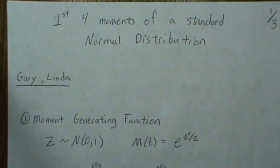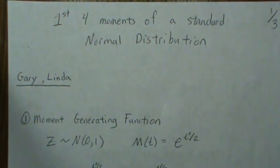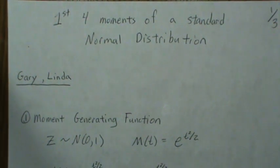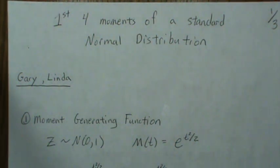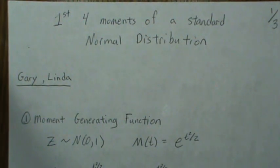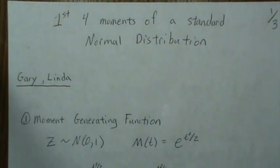In this video, we're going to derive the first four moments of a standard normal distribution in two different ways. One, we're going to use moment generating functions, and then the other, we'll just use the standard definition of when expectation comes into it.